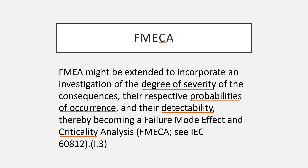FMECA is similar to FMEA, but the degree of severity, probability, and detectability are each rated on a scale — say 1 to 5 or 1 to 10. The higher the number, the higher the risk. The criticality is classified based on the multiplication of S (severity), P (probability), and D (detectability). The difference between FMEA and FMECA is that in FMEA you decide on low, medium, or high risks, whereas in FMECA you assign a numerical rating for each risk category.